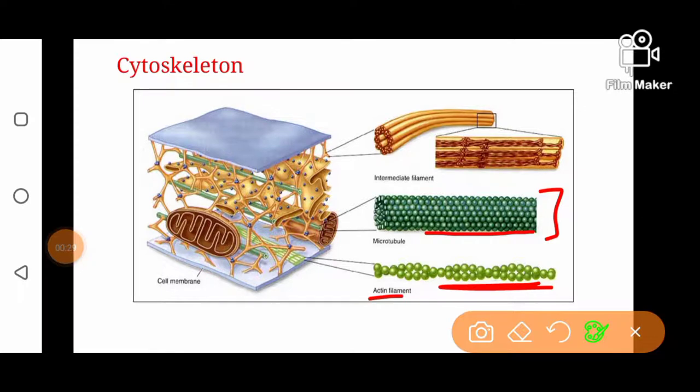Microfilaments have a diameter of 7 nanometers, making them the thinnest filaments. Intermediate filaments have a diameter in between microtubules and microfilaments, at about 8 to 12 nanometers.